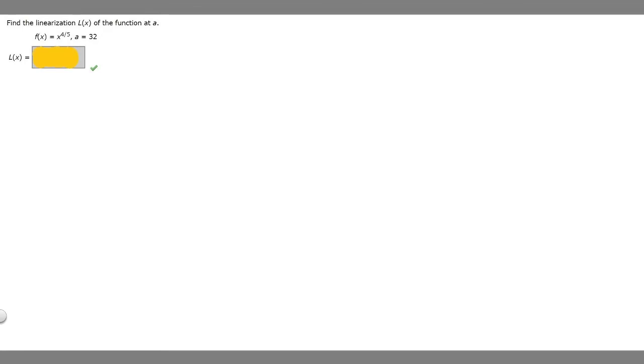So in this problem we're told to find the linearization L of x of the function at a and we're given the function f of x equals x to the 4/5 and a equals 32. We're supposed to find L of x.